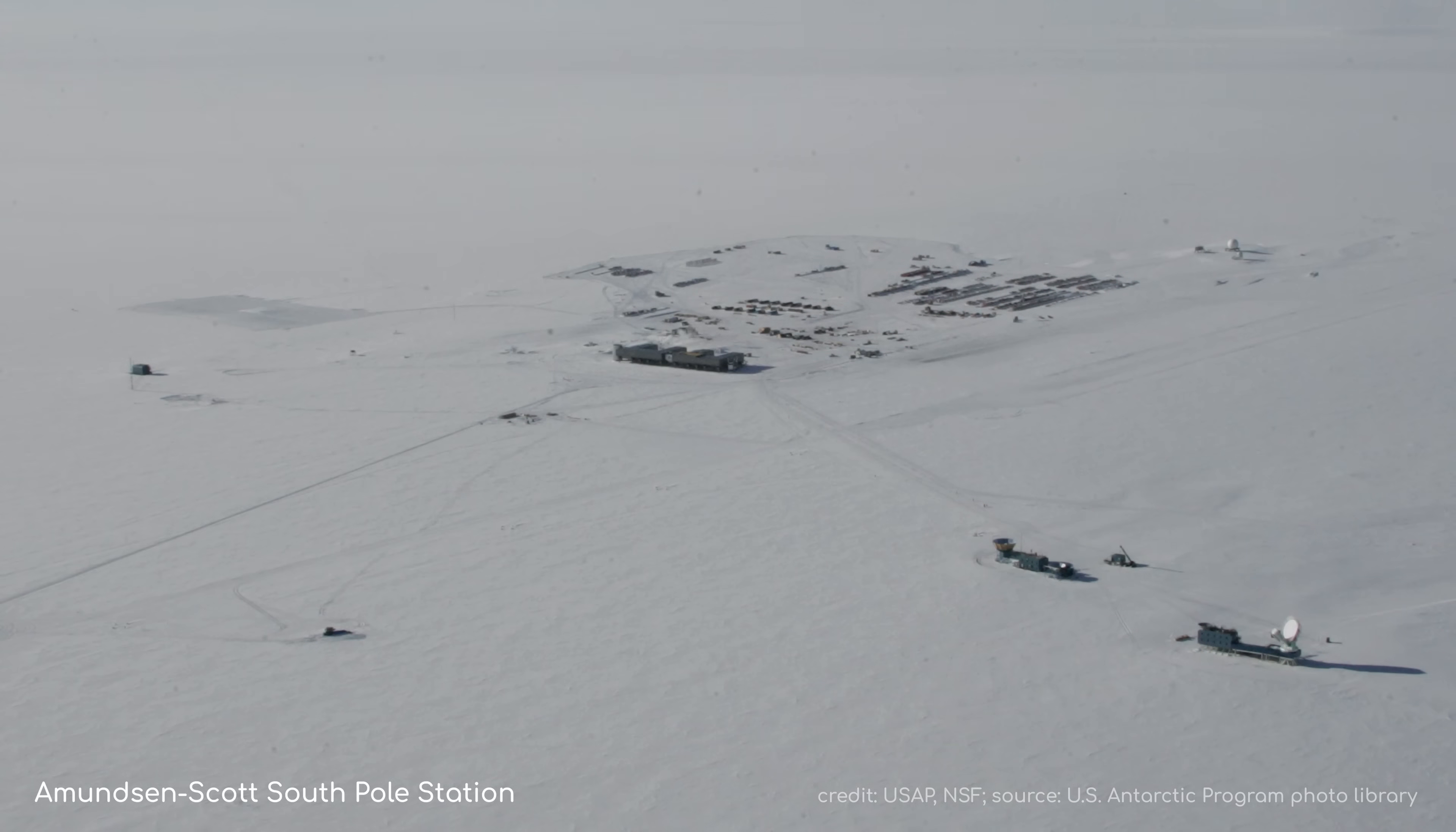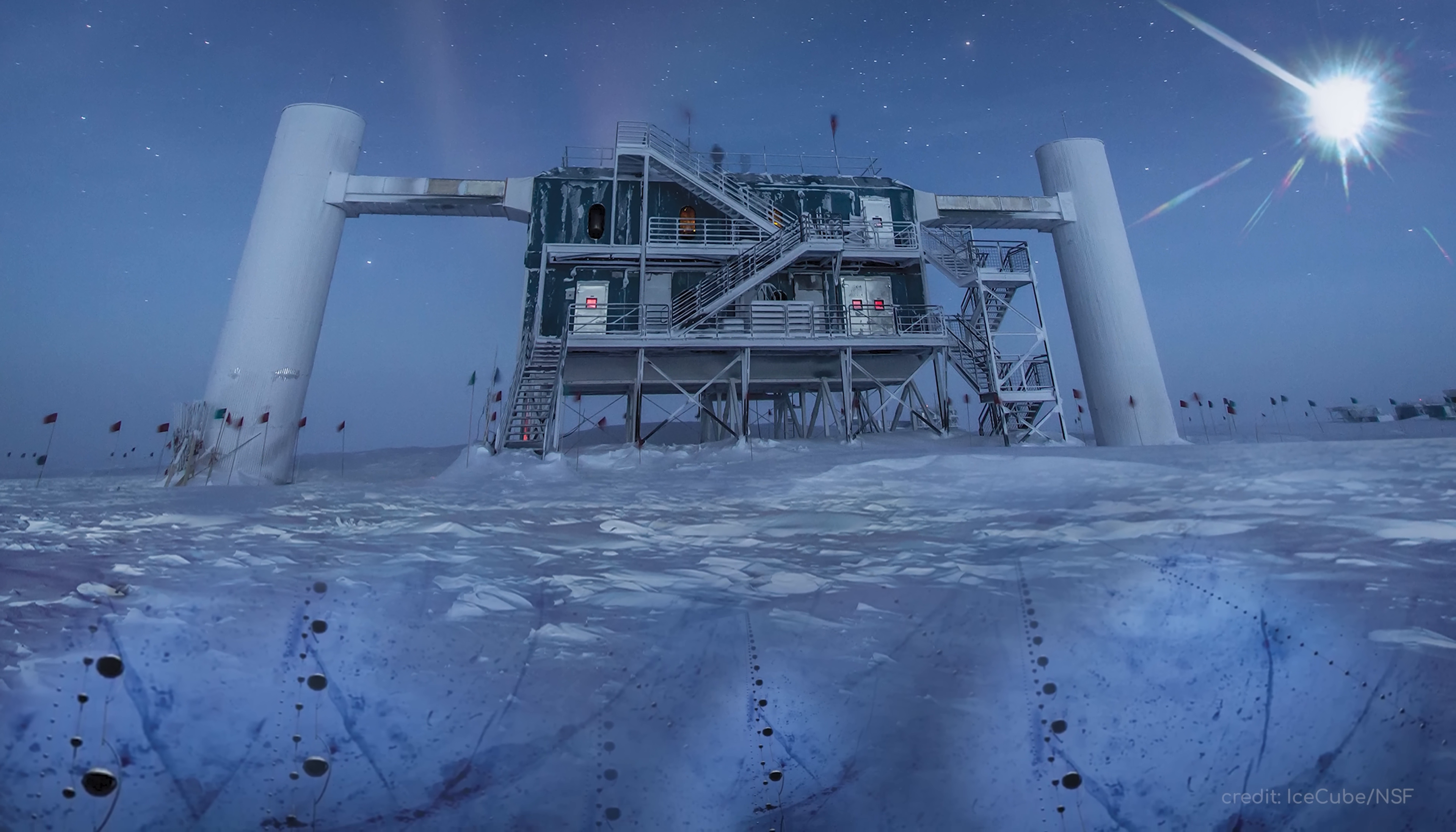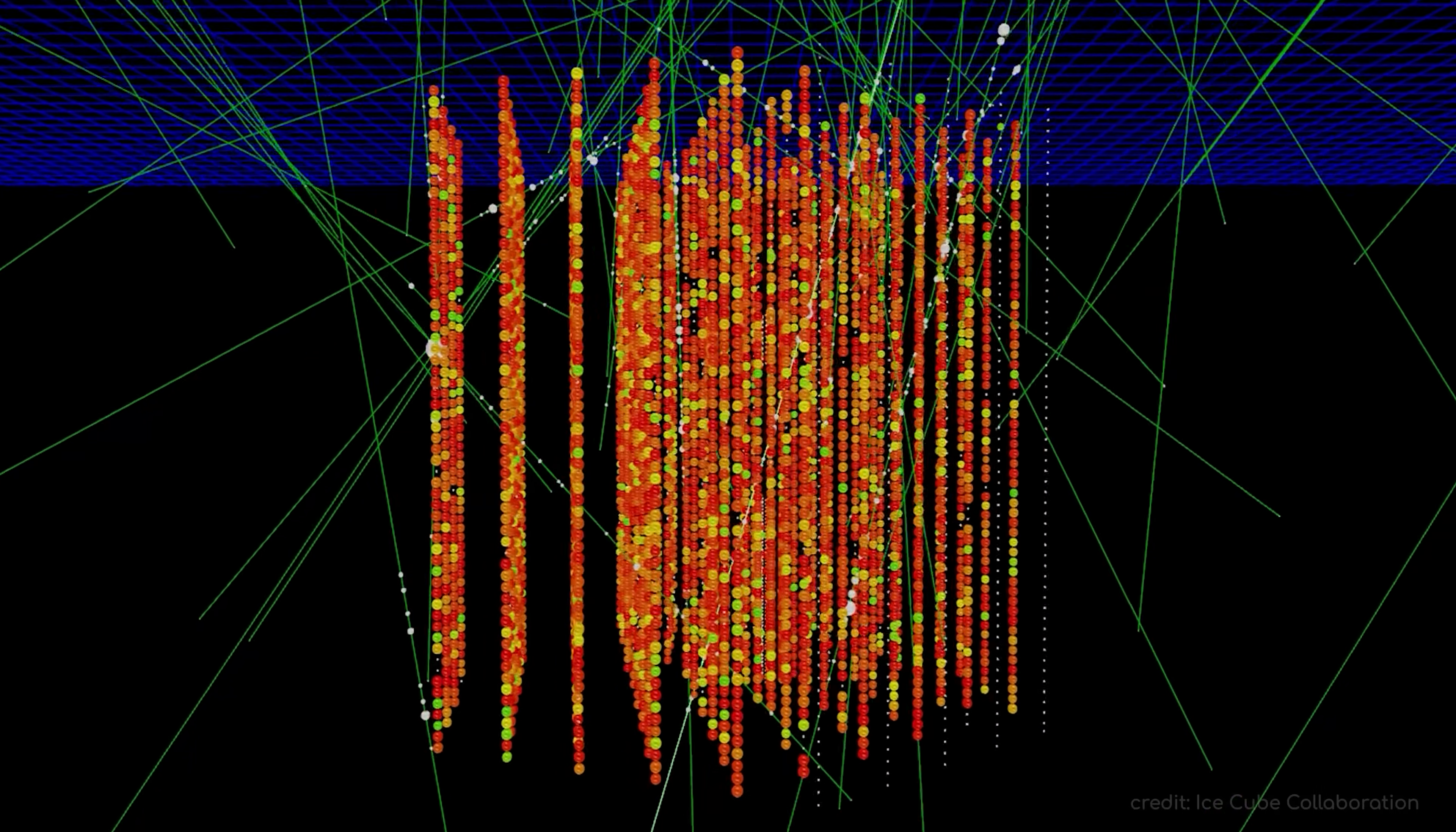If you stood on this icy surface, you might not be aware that some of the rarest events in the universe are being observed beneath your feet. Located at the most southerly human-occupied base in the world, the Amundsen-Scott South Pole Station, IceCube makes use of the very ice in which it is built to observe high-energy neutrino particles. But why? Why this extreme environment and weird design? Because neutrinos are weird. Really weird.